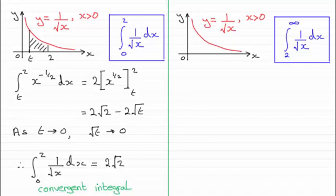We looked at integrals that approached an asymptote. One of the ones that we considered was y equals 1 over root x, where I've got the curve here sketched for x greater than zero, and looked at trying to work out this integral here from 0 to 2 of 1 over root x with respect to x.